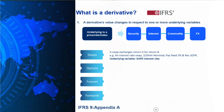With a swap, all it is is you're exchanging the return on one thing for another. For example, an interest rate swap with a notional of $10 million where you pay a fixed coupon rate of 3% and you receive the floating SOFR rate. SOFR stands for the Secured Overnight Financing Rate and it's a US interest rate index.